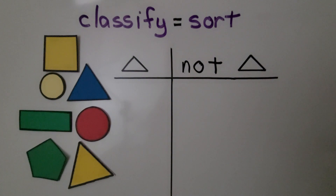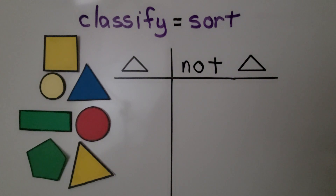A triangle has three sides and three vertices. Remember, vertices are corners. So it's going to have three sides and three corners.